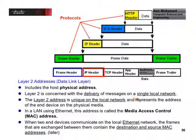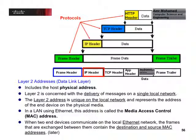Layer two is concerned with the delivery of messages between one device to another within the local area network. From one local area network to another, we don't use the physical address — we use the layer three address or the IP address. In a LAN using Ethernet, this address is called the Medium Access Control address, or MAC address, which some of you are familiar with.